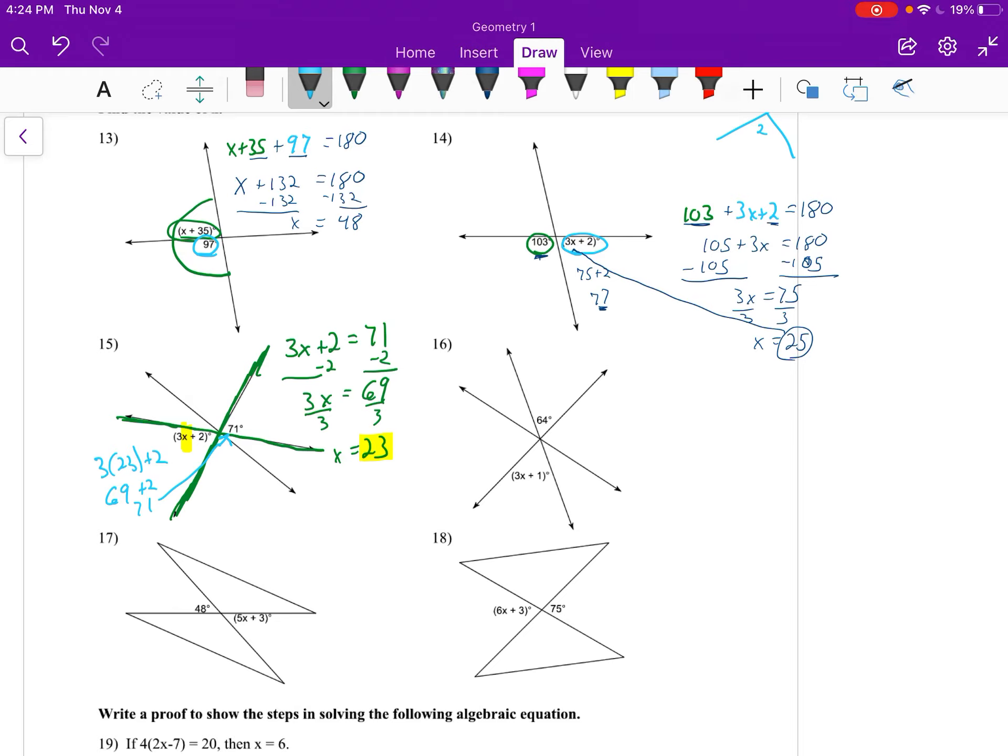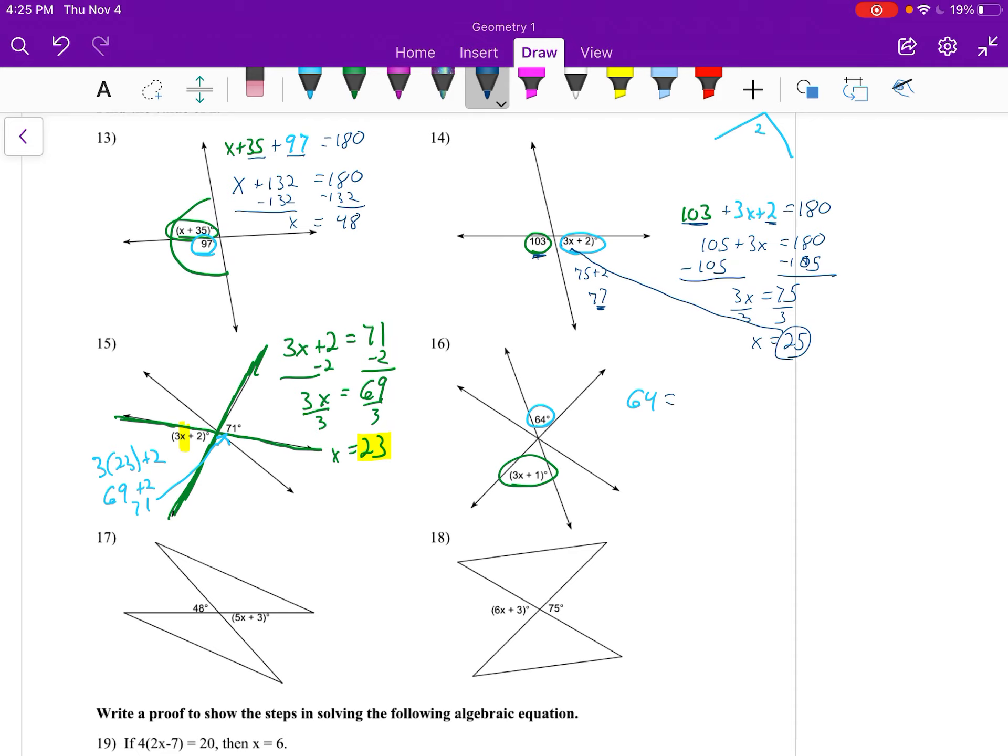The next several are just more of the same. Here we have 64 has to equal 3x plus 1, so 64 equals 3x plus 1. Solving that, we would subtract 1 from both sides. That gives us 63 equals 3x, divide by 3 gives us that x would be equal to 21.